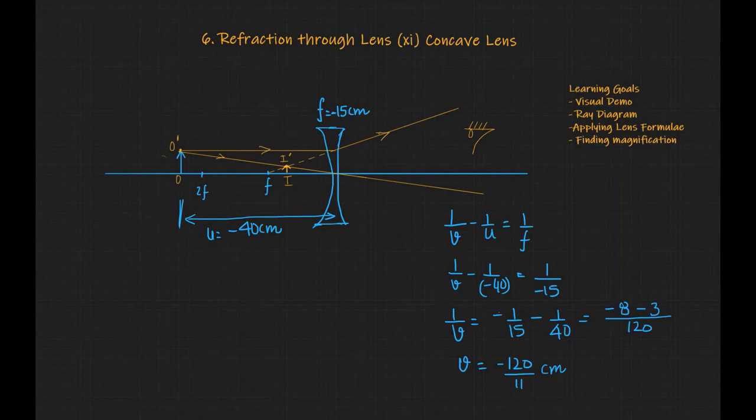That will be this distance and we can see that that is indeed lesser than the focal length. That will be approximately minus 10.9 cm approximately.